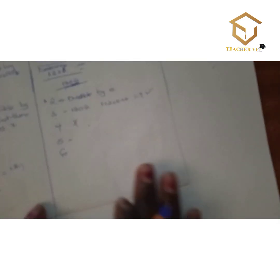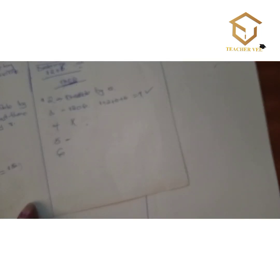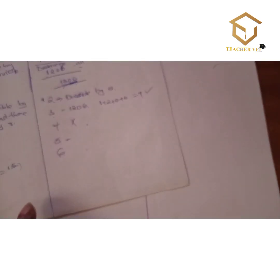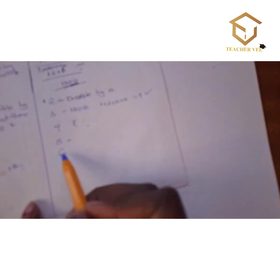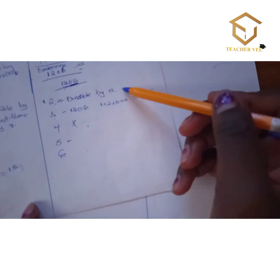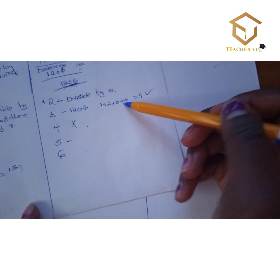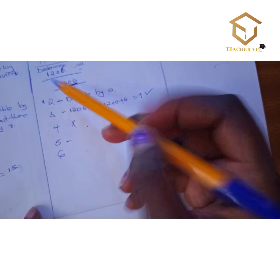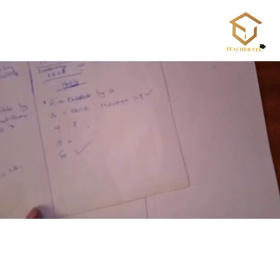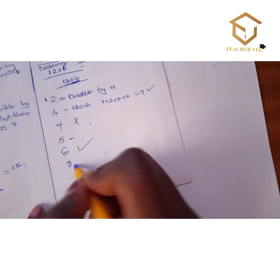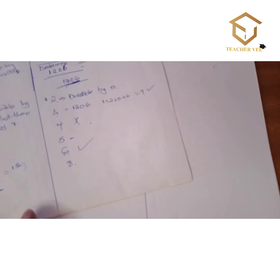For divisibility by 6, a number must be divisible by both 2 and 3. Since 1206 is divisible by both 2 and 3, it is therefore divisible by 6.